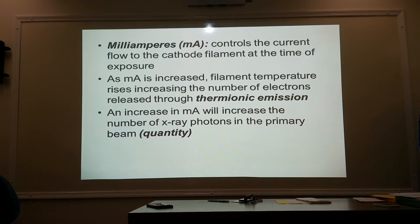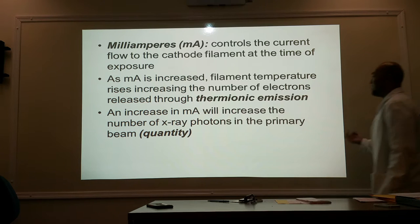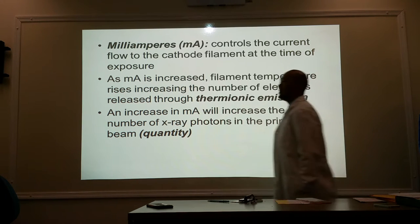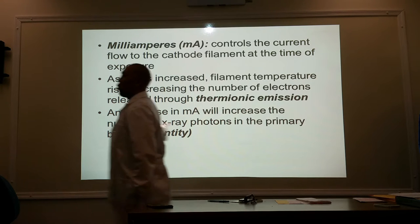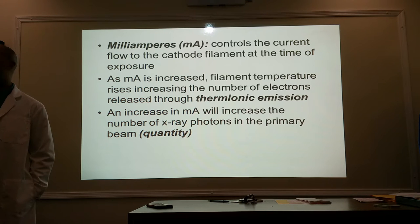The number of electrons is also related to the number of x-ray photons that we produce. So the more electrons that we boil off, the more x-ray photons we are producing, which is also controlling patient exposure. An increase in MA will increase the number of x-ray photons in the primary beam. It controls quantity, not quality — the amount, the number.